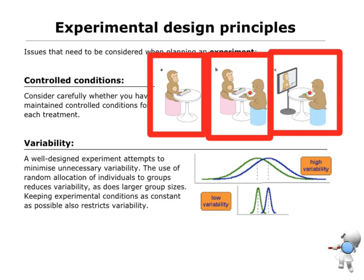So we want to make things controlled. We want to have all conditions exactly the same, except for the one thing we're testing.